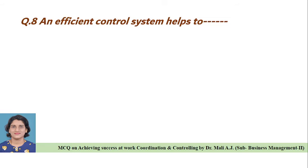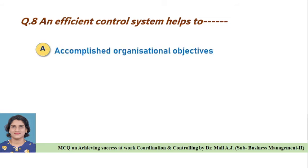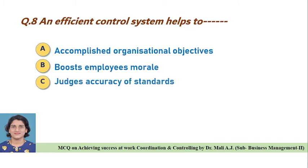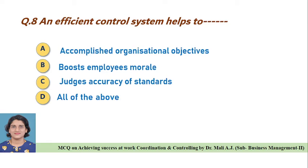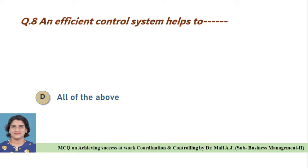Question eight: An efficient control system helps to — Option A: accomplish organizational objectives, Option B: boost employees' morale, Option C: judge accuracy of standards, Option D: all of the above. Correct answer is Option D, all of the above.